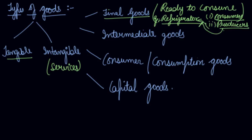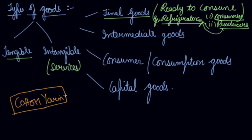Now, what are intermediate goods? Intermediate goods are those goods which have not crossed the boundary line of production. Value is still to be added to these goods and they are not yet ready for use by the final user. For example, if you have purchased cotton yarn, that is your intermediate good.